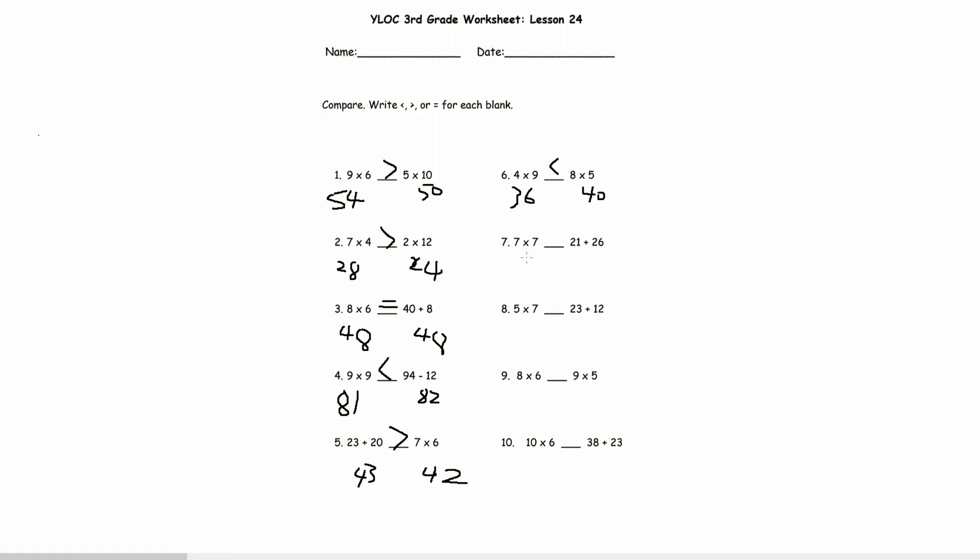7 times 7, there's 7 of 7's. 49, 21 plus 26, 1 plus 6 is 7. 2 plus 2 is 4. So 49 is greater by 2.